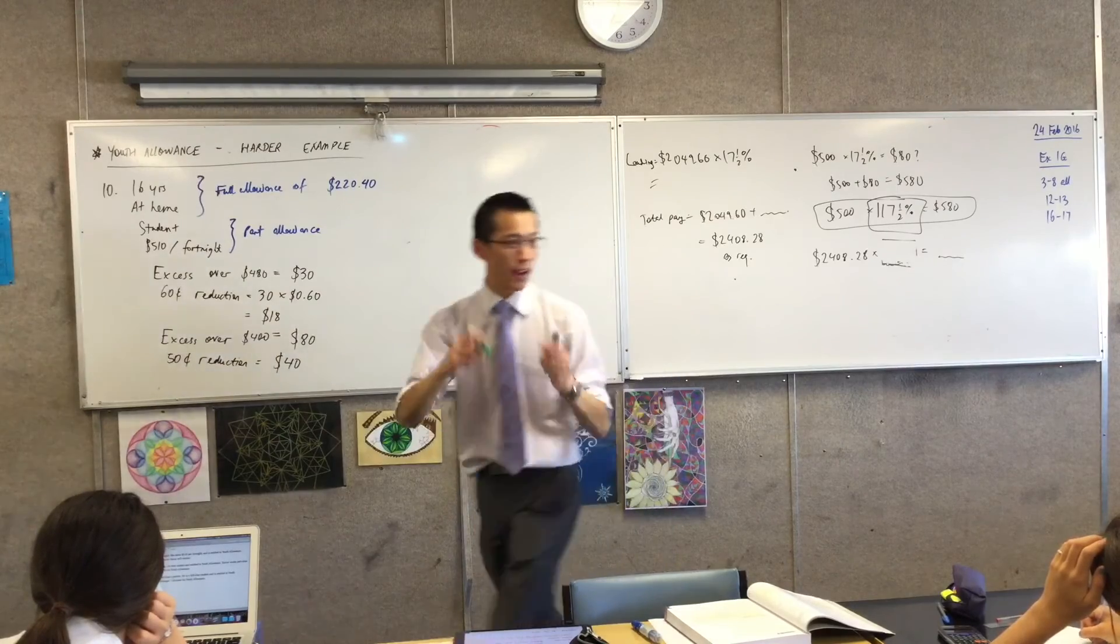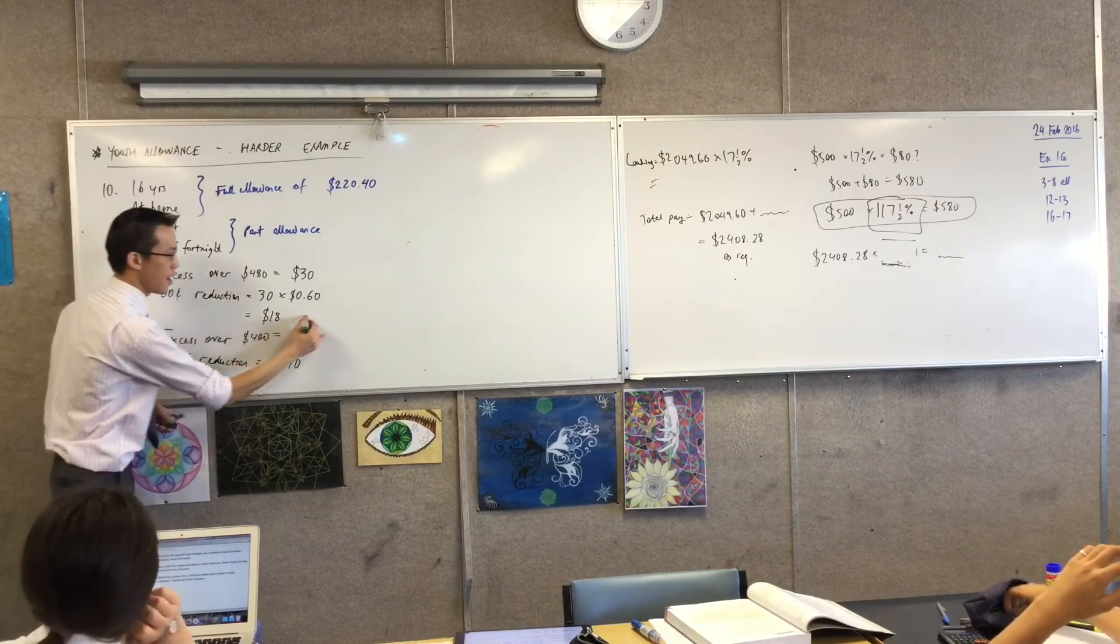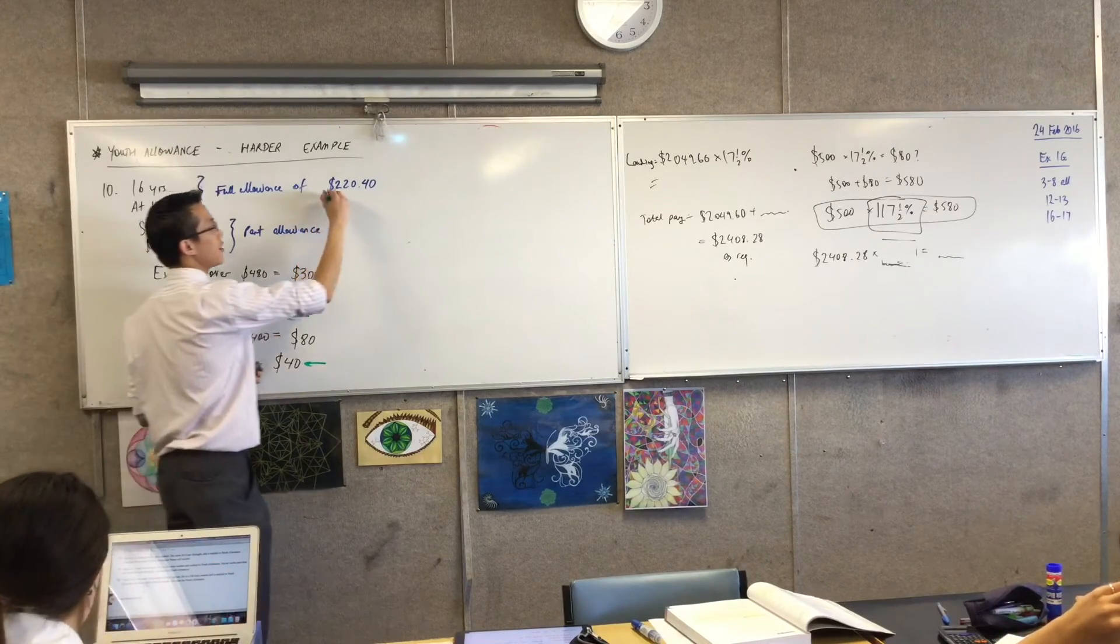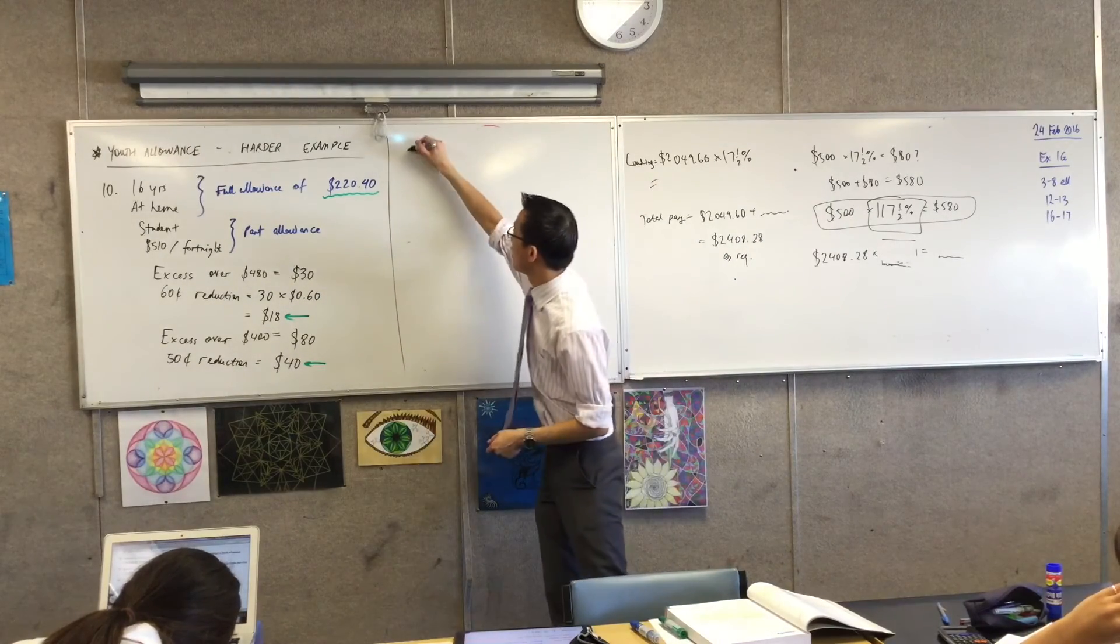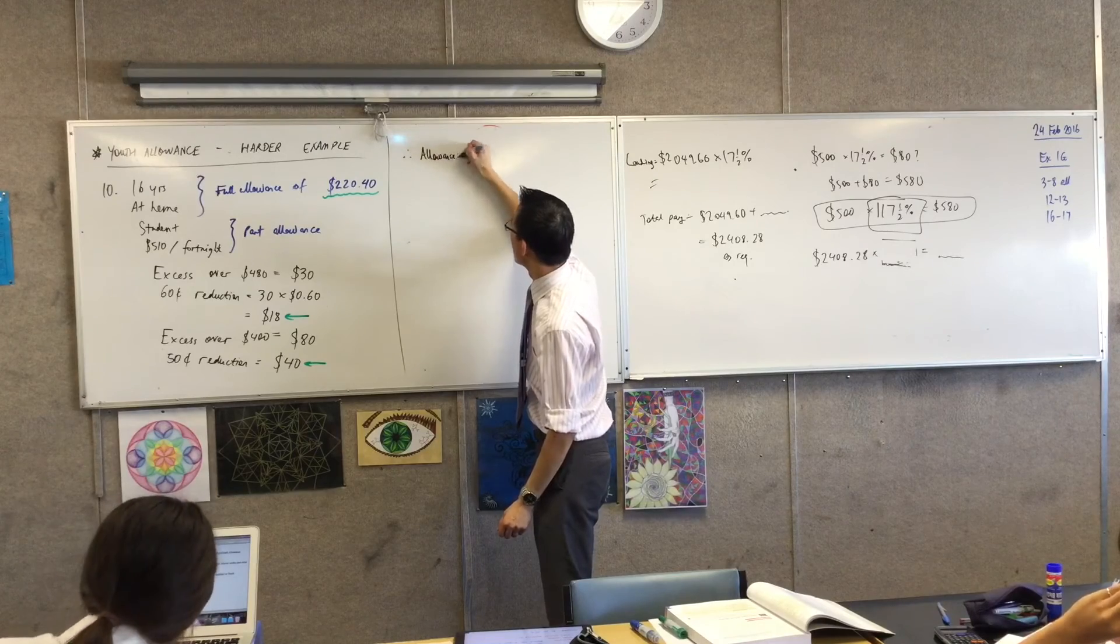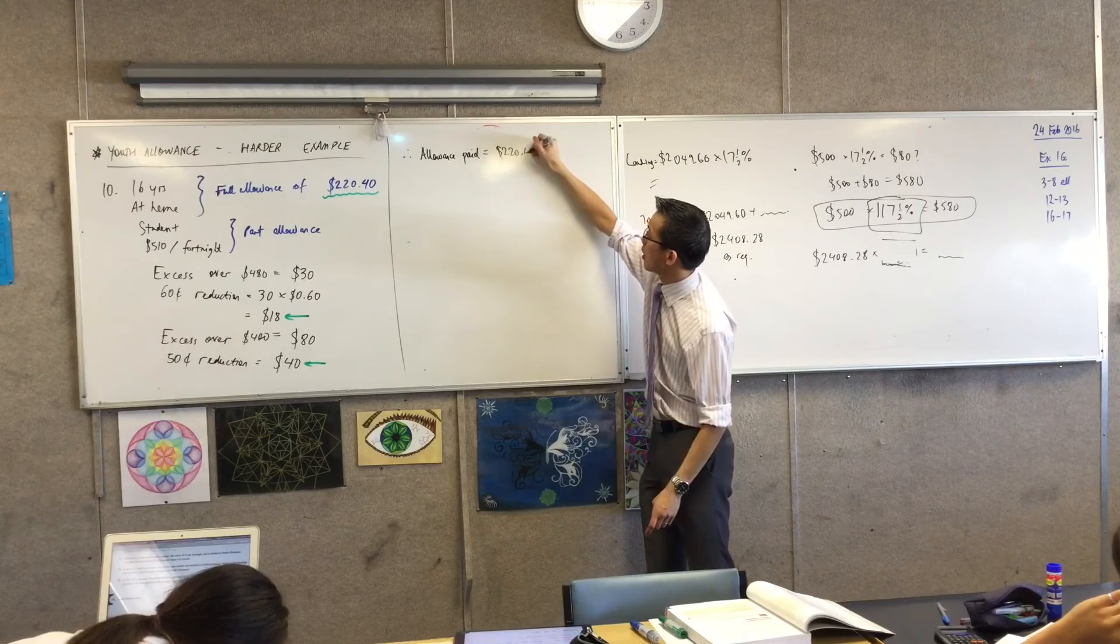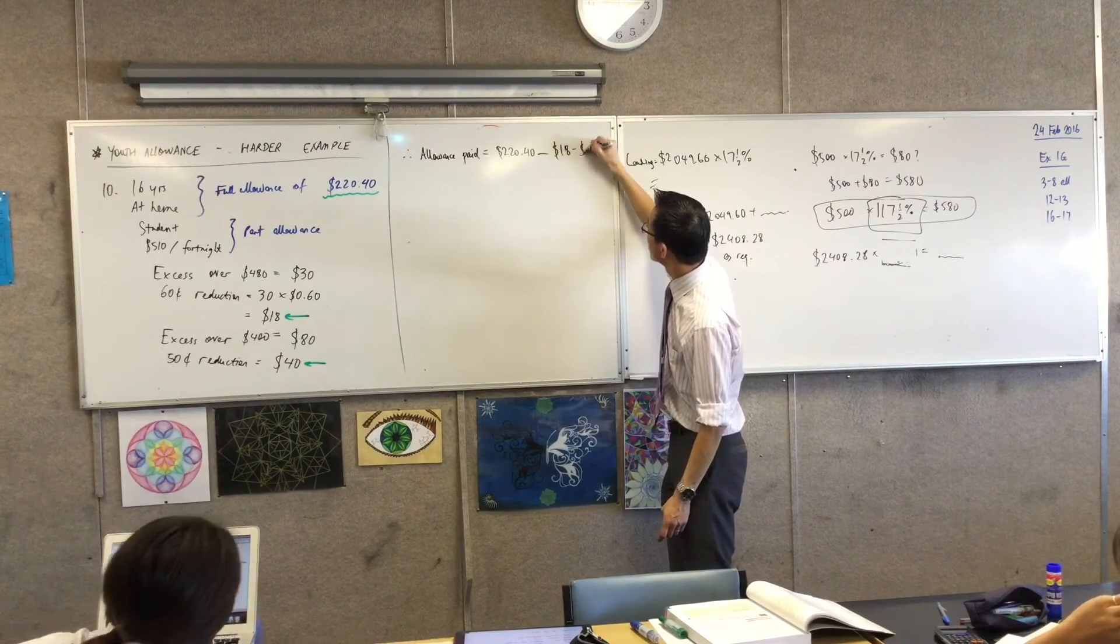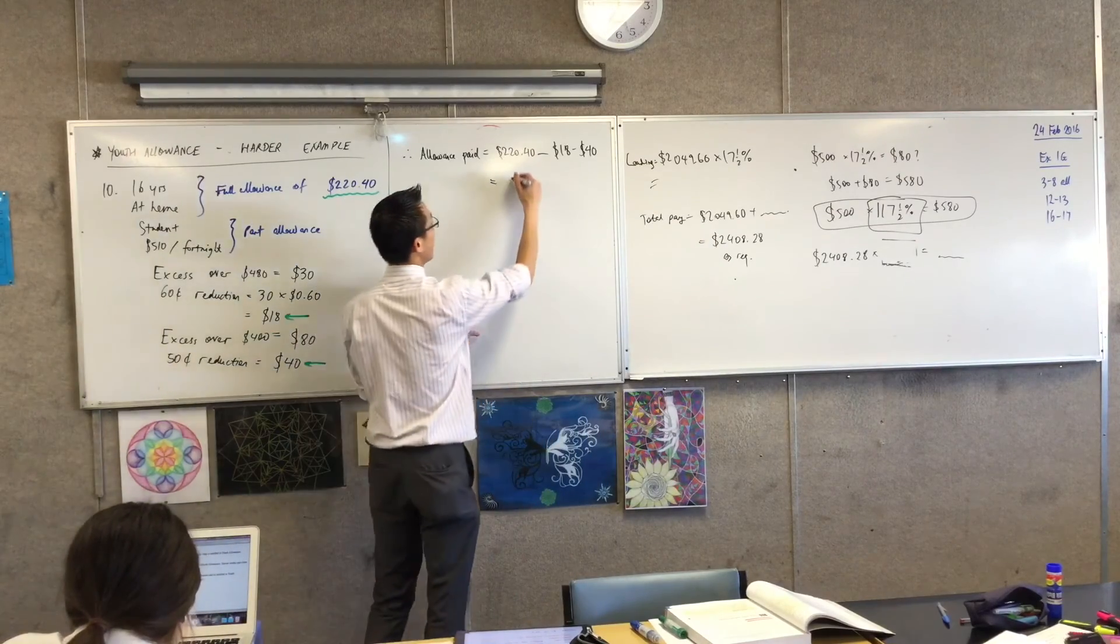Now grab another color if you've got it there and highlight for yourself, because we've just done four things. By the way, can you see how important using words is? Four things. They're all different. And you do not want to confuse them with each other. Here is reduction one, that $18. And here is reduction two. Now I can combine those green things with what her full allowance would have been, and then I'll work out how much she's actually going to get paid. So now to conclude, I would say therefore, allowance that's paid - because the whole idea is there is an allowance that she gets but some of it is withheld. So only some of it gets paid to her. It's going to be that $220.40 that we started with, but we're going to take away both of these reductions, the $18 and the $40. This one I cannot do it in my head. Someone want to help me out? $162.40. Thank you.